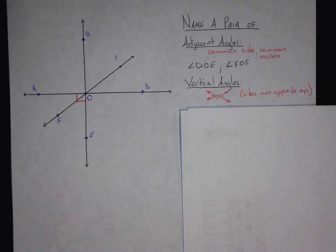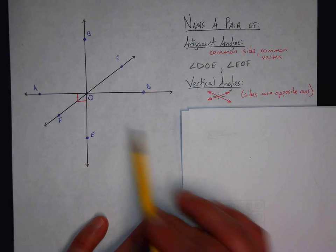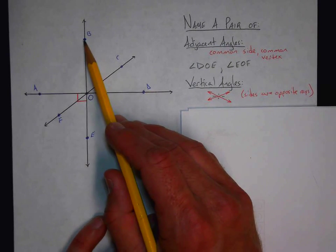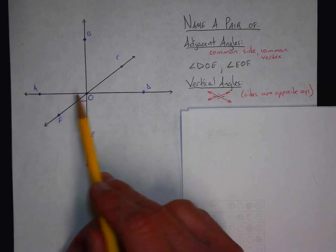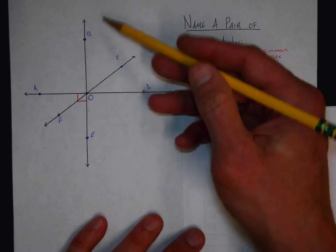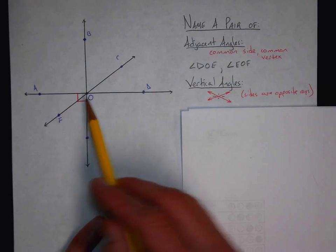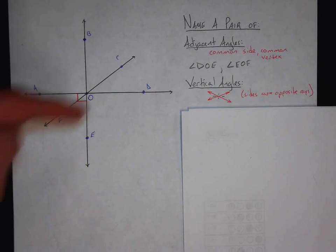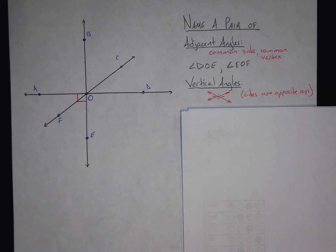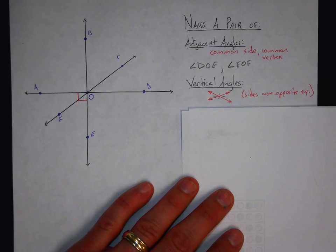I always use that diagram, but vertical angles don't have to look like that. Vertical angles can easily be 90 degrees. For example, if you look at angle BOD, that is a vertical angle with angle EOA. They're both vertical angles. Sides are opposite rays: OB and OE are opposite rays, OD and OA are opposite rays. Those are opposite rays, so the angles that they make are vertical. That's by definition vertical angles. You can pick any two in the picture.